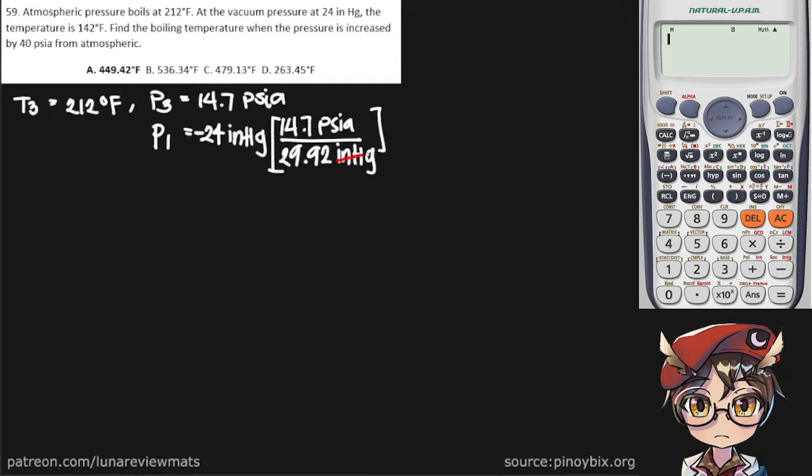We know that for every 14.7 PSI A there is 29.92 inches of mercury, so these cancel out, and we still need to convert that into absolute, so simply add our atmospheric pressure. This should be equal to 2.909 PSI absolute, and the temperature of this pressure is 142 degrees Fahrenheit.